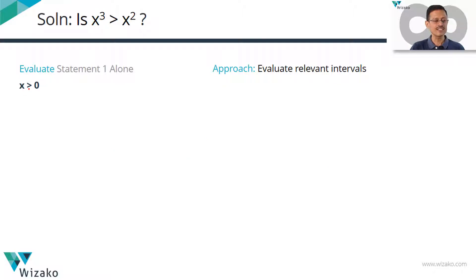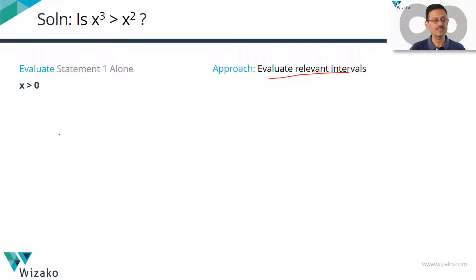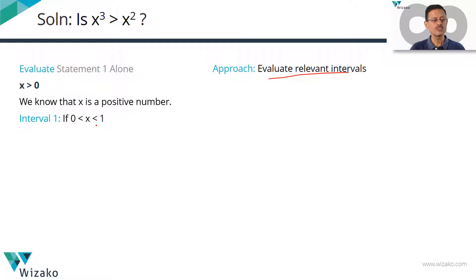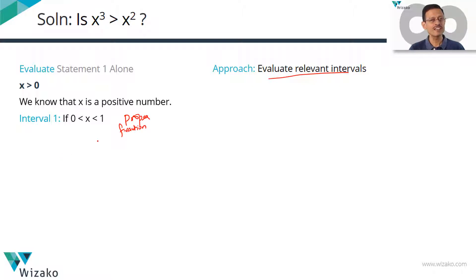Start with statement 1: X is greater than zero. We are going to evaluate X in relevant intervals. X greater than zero splits into two relevant intervals. The first is X lying between 0 and 1, where X is a proper fraction — its magnitude is less than one. Whenever in doubt, substitute a number quickly and check.